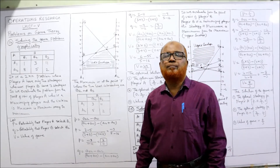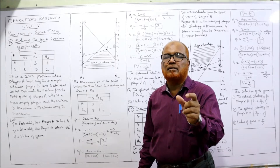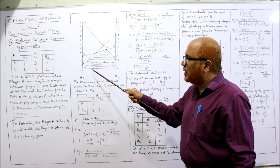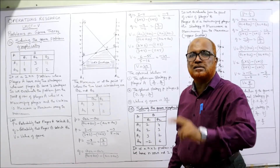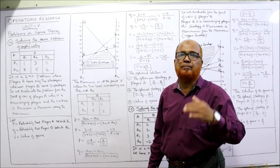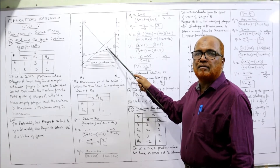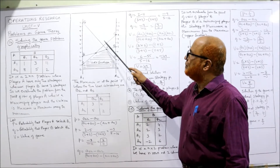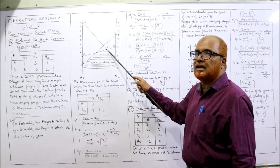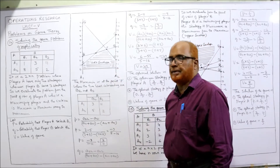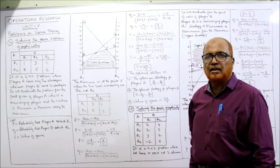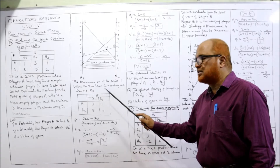Since we're evaluating from the maximizing player's point of view, we need the maximum among the minimums, which are found in the lower envelope. In the lower envelope, two lines intersect at two points. Whichever intersection point is the highest gives the maximum value — that is point P. The two lines intersecting at P are the second line and the third line, so we take B2 and B3. The final 2×2 matrix is A1, A2 against B2 and B3; B1 is omitted.